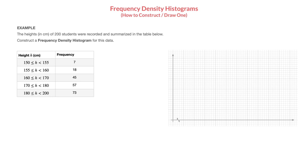In this video, we learn how to construct or draw a frequency density histogram. To do that, we're going to be working through the example we see here, in which we're told that the heights in centimeters of 200 students were recorded and summarized in the table below — a frequency table involving grouped continuous data. We're then told to construct a frequency density histogram for this data.